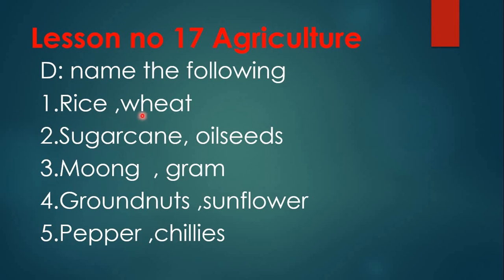Next, Section D: Name the following. Two food crops — rice and wheat. Two cash crops — sugarcane and oil seeds. Two pulses — moong and gram. Two oil seeds — groundnuts and sunflower. Two spices — pepper and chilies.